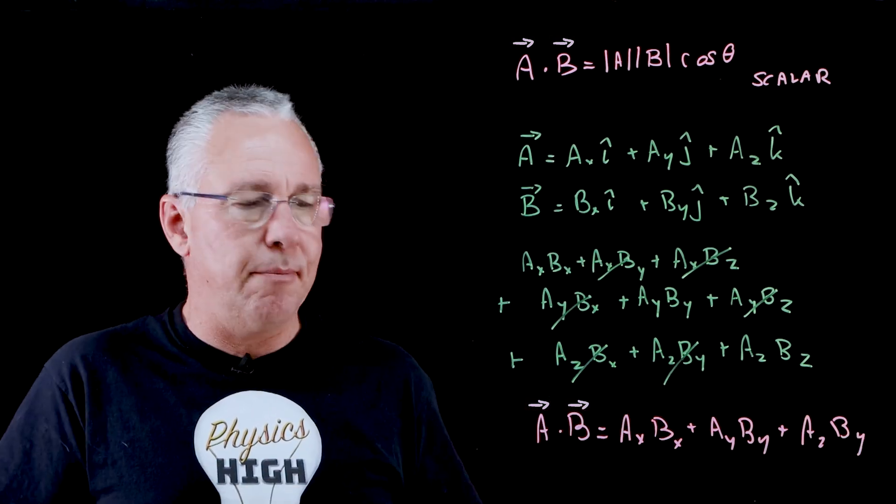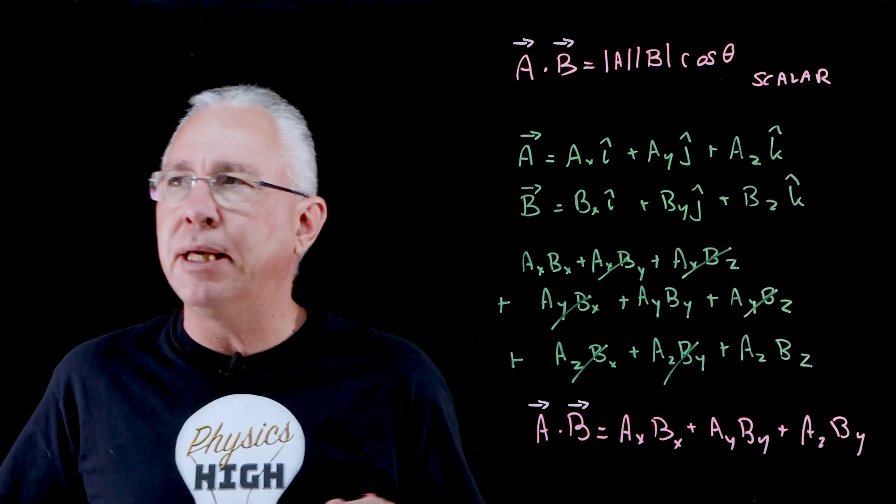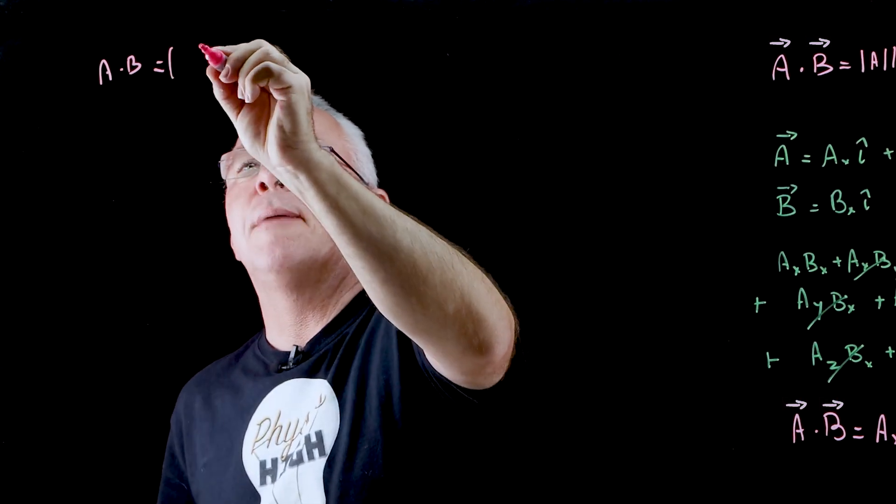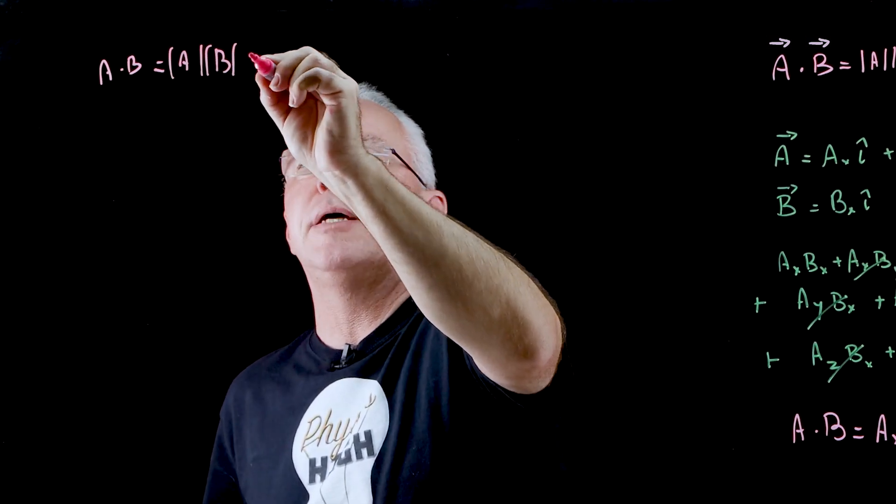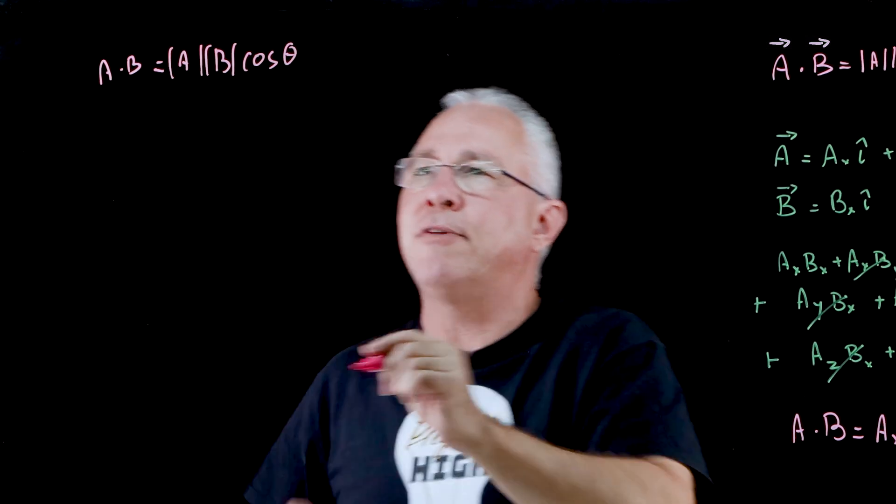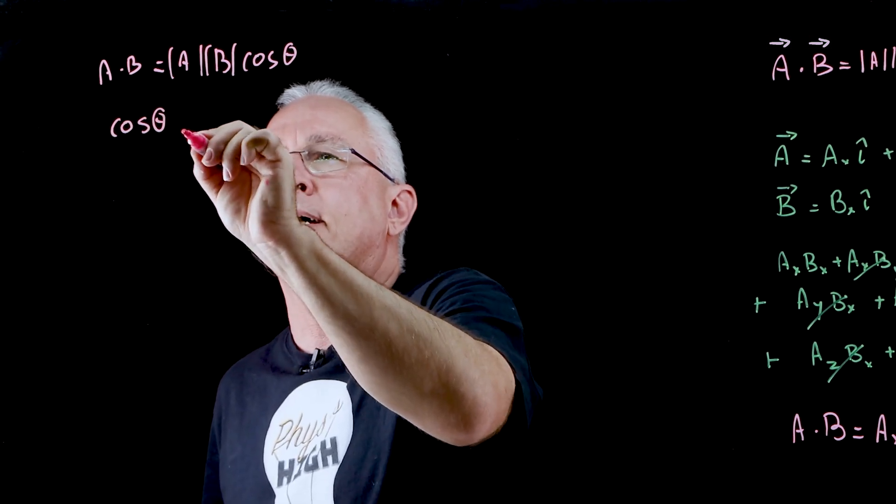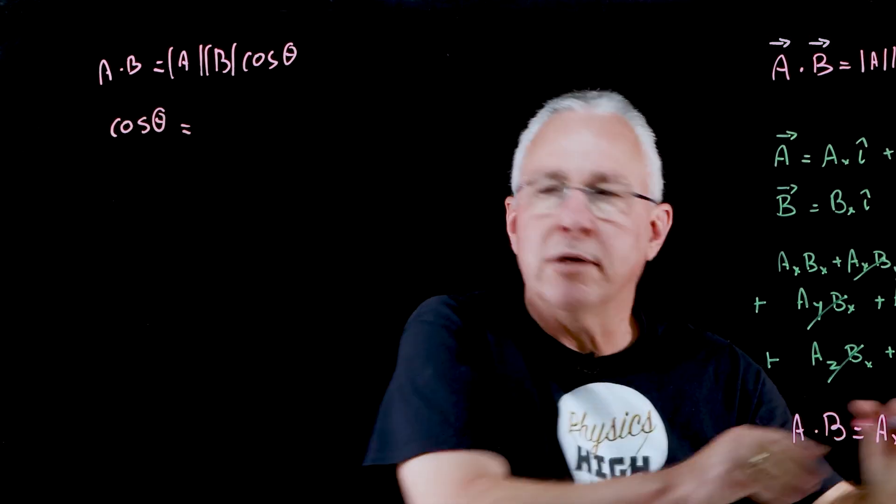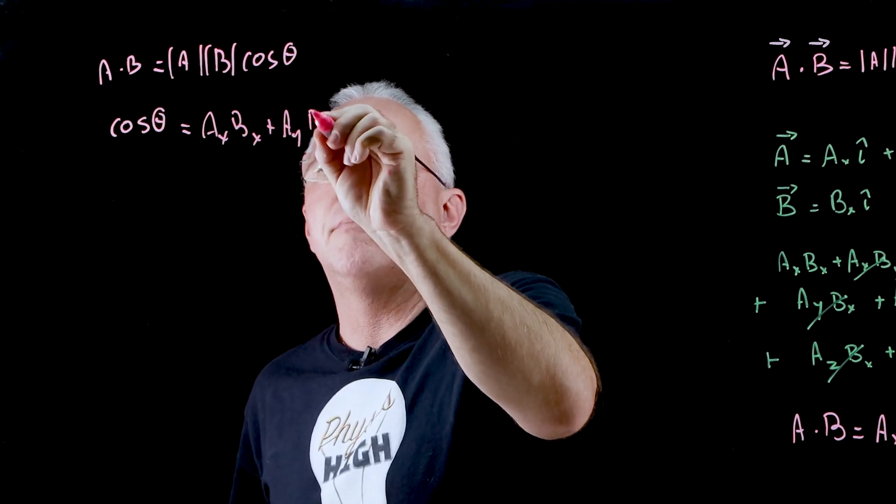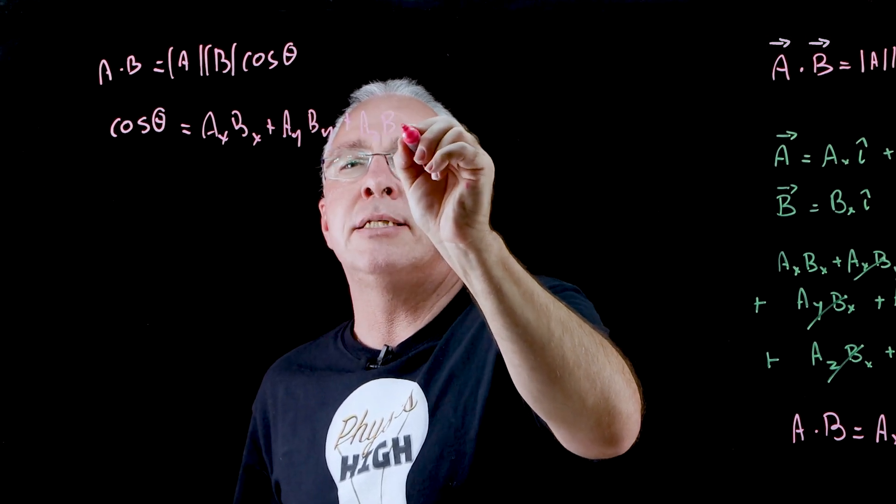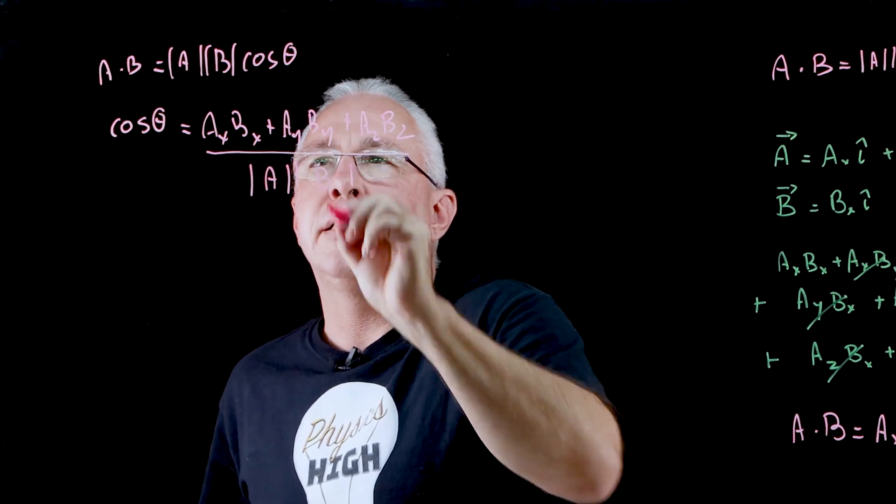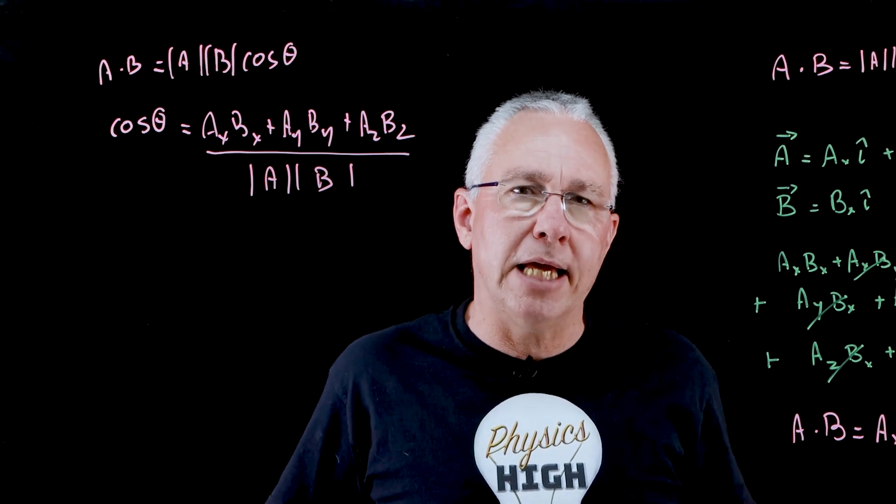So what about the angle now between A and B? We know that A dot B is equal to the absolute value of A multiplied by the absolute value of B multiplied by the cosine of the angle. We've already established that's equal to this, so let's rearrange this. We end up getting cosine theta is equal to A_X B_X plus A_Y B_Y plus A_Z B_Z all over the magnitude of A and B. And so that's how you can work out the angles.